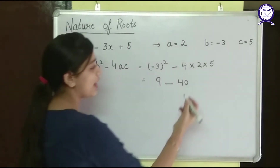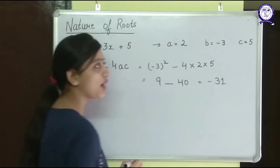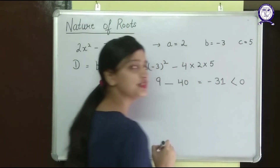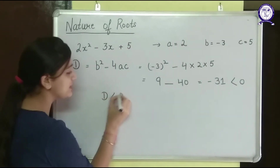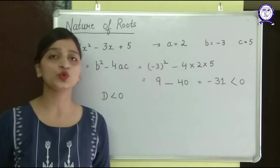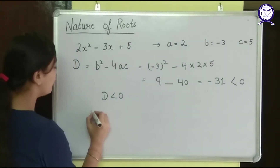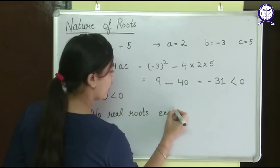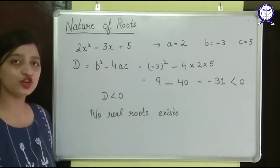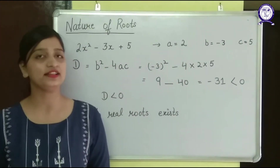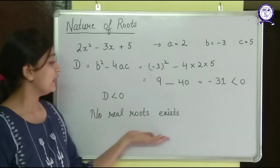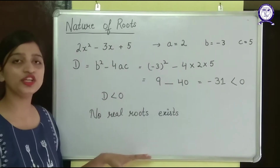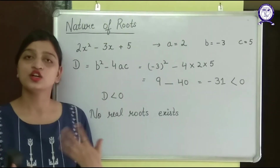3 squared is 9, and 4 times 2 times 5 is 40. So I will get 9 minus 40, which is minus 31. I can see that this value is less than 0, so D is less than 0. And I know that when D is less than 0, no real roots exist. So in this question, real roots do not exist, and we don't need to go any further because we cannot find the roots.